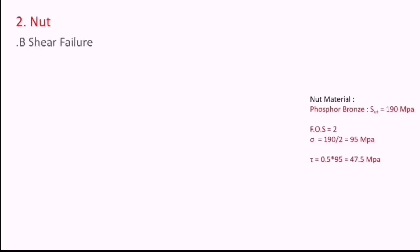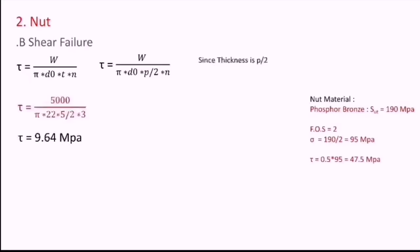Other type of failure of the threads in the nut is the shear failure. I can write τ = W/(πd₀·t·n). As we know, thickness is equal to P/2. Substituting all the values, I will get the value of τ as 9.64 MPa. The allowable stress for τ for a nut was 47.5. We got answer as 9.64. Hence, we can say our nut is safe.